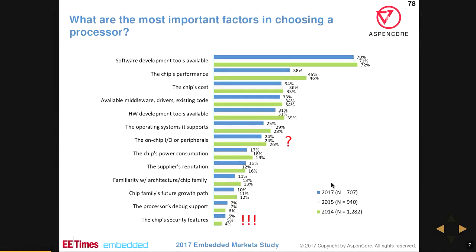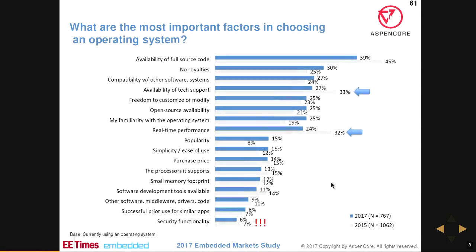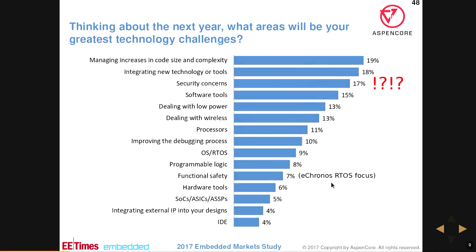This is a result from a survey given every year by an EE news website, where about a thousand embedded engineers answered. The question was: what are the most important factors in choosing a processor? Security features — no one cares. What's the most important factor in choosing an operating system? Security functionality — no one cares. But if you ask them what will be their next greatest challenges, the third most popular answer is security concerns. So everyone knows there's a problem, but not many people seem to be doing anything about it in the embedded space, which is kind of sad.